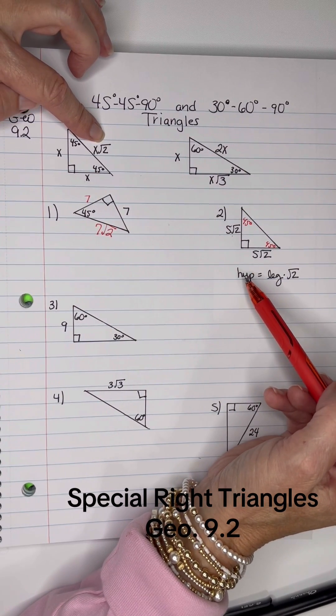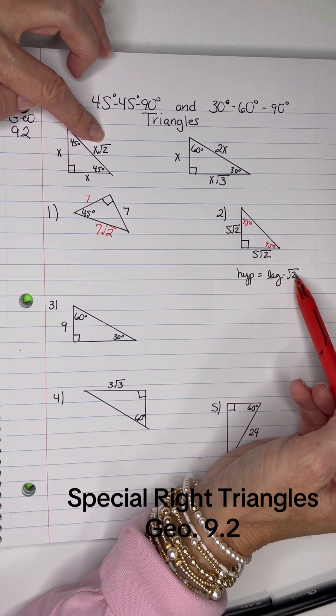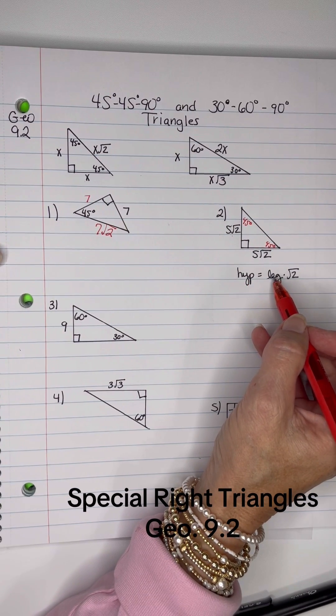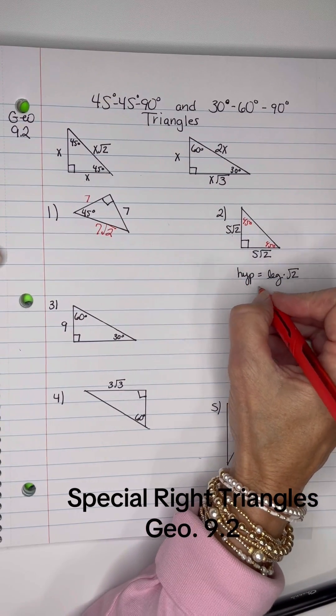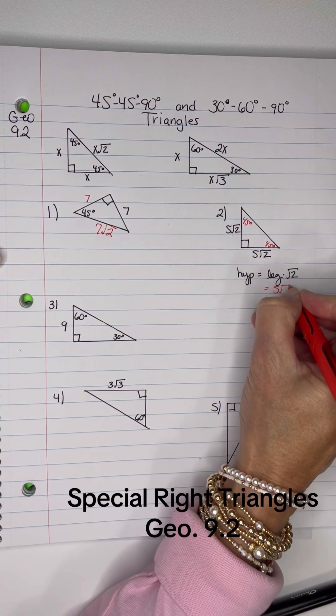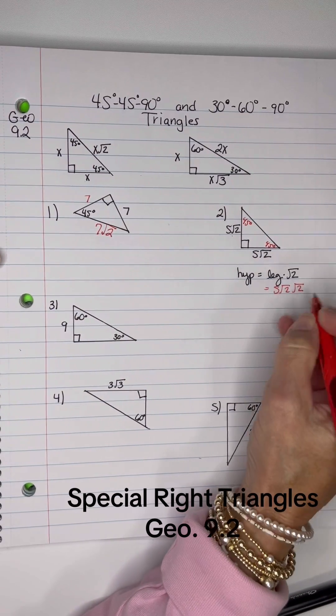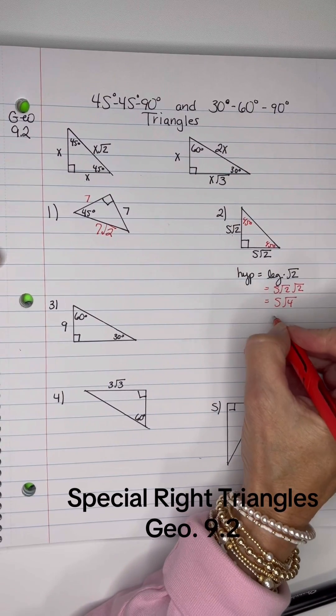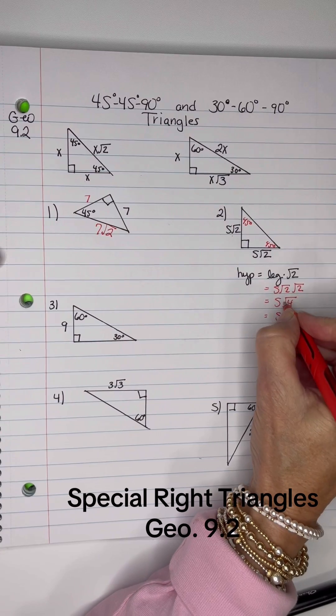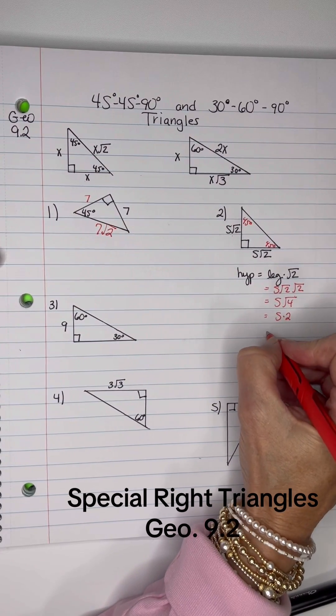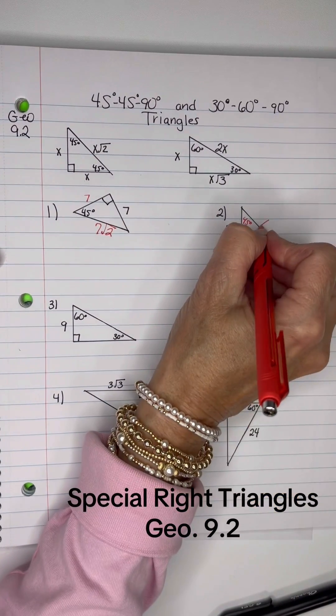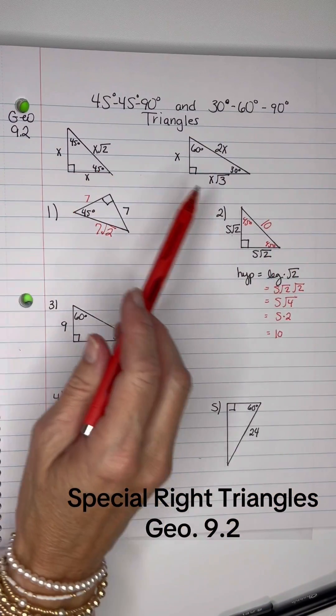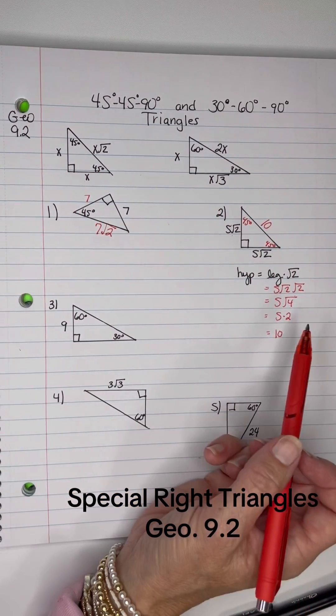So I'm going to write my sentence down. The hypotenuse equals the leg times root 2. And I'm going to replace the leg with 5 root 2. So the hypotenuse equals 5 root 2 times root 2. And that is 5 times root 4. 2 times 2 is 4, which is 5 times 2, because the square root of 4 is 2. And that is 10. So the hypotenuse is 10, which is not what it normally looks like, but that does happen.